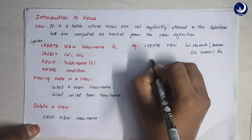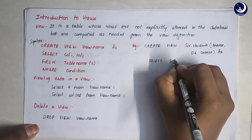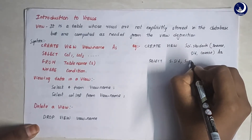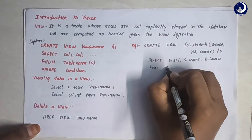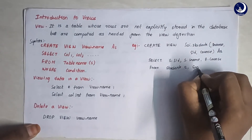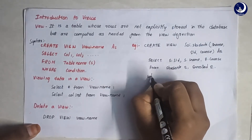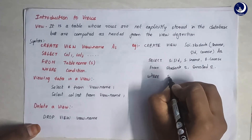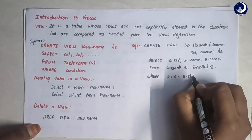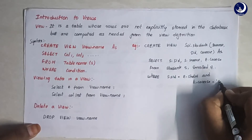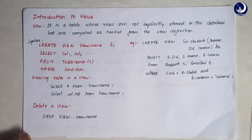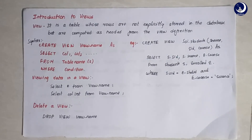The full statement is: SELECT S.SID, S.name, E.course FROM student S, enrolled E WHERE S.SID = E.studentID AND E.course = 'science'. This is how you create a view on science students — selecting certain columns only, S.name, S.SID, and course from two tables, creating a view that gives the details of the science students.